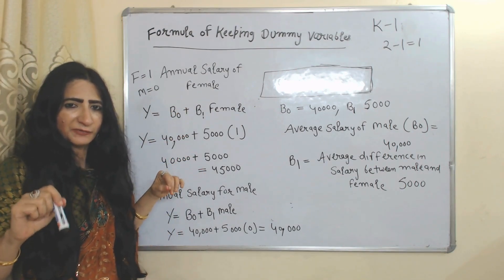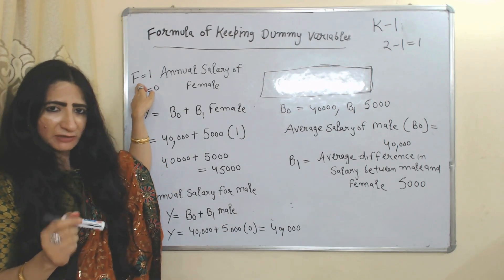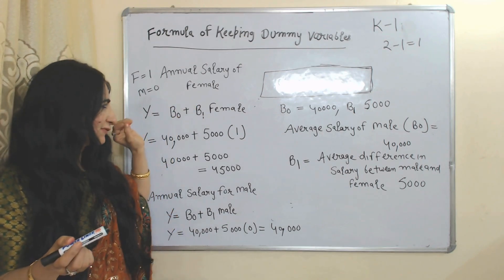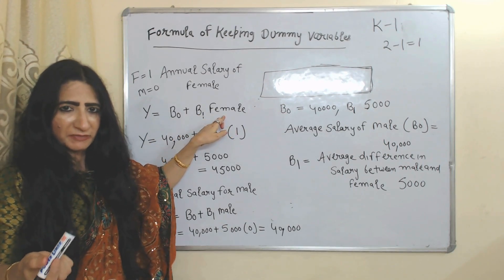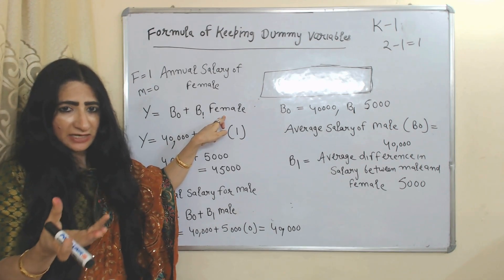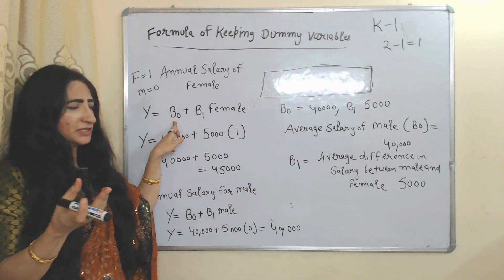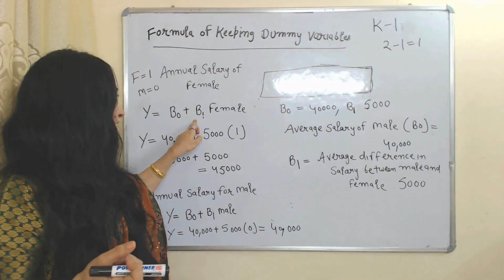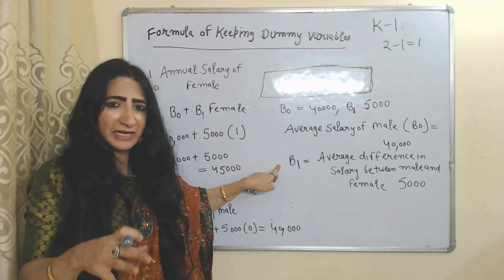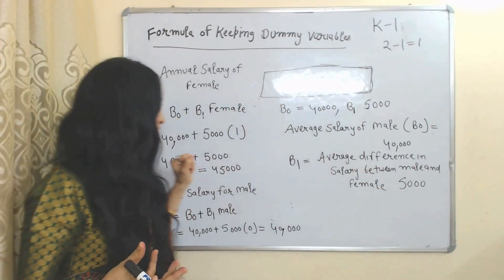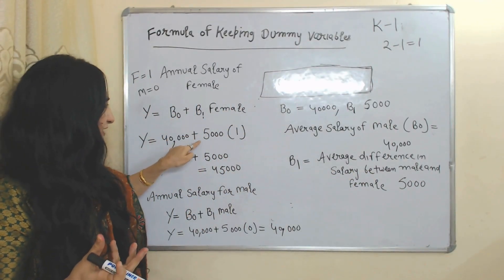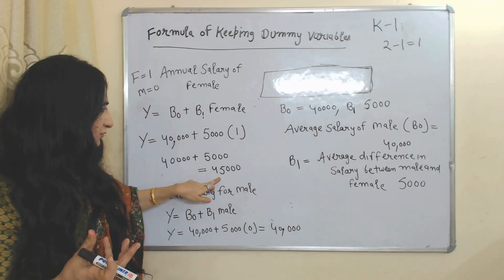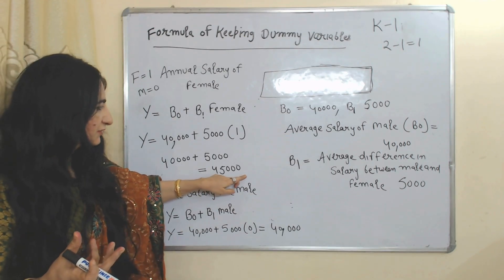Now we will see an example. We have to calculate the annual salary of male and female. For female we will put one and for male we will put zero. First we calculate the annual salary of female — our dummy variable is female. Beta-naught represents the average salary of male, which equals 40,000. Beta-one represents the difference in average salary between male and female, which equals 5,000. For female we put one, so the calculation becomes 40,000 plus 5,000, which equals 45,000. So the annual salary of female is 45,000.